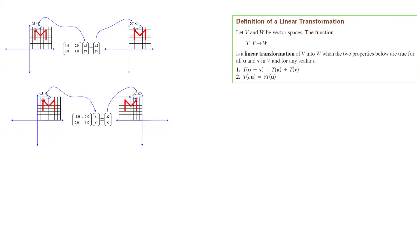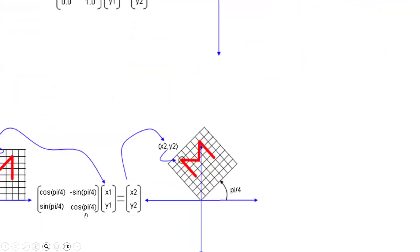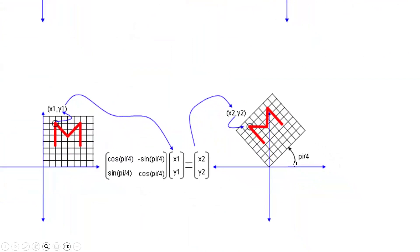If you have a linear transformation given by the matrix [−1, 0; 0, 1], it gives you a reflection with respect to the y-axis. This object, originally in the first quadrant, maps to the second quadrant under this linear transformation. You can also rotate objects: the transformation with matrix [cos(π/4), −sin(π/4); sin(π/4), cos(π/4)] gives a rotation of π/4, and the original object is rotated a little bit.